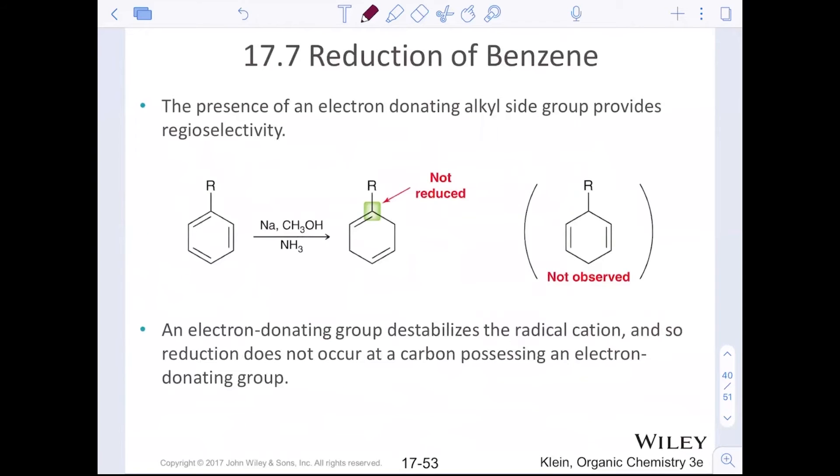If we have the presence of an electron donating group, an alkyl group, so an sp3 carbon, that usually provides some regioselectivity so that this carbon is not reduced with the electron donating group. Why? Because when we looked at the mechanism, that carbon, because it has an electron donating group, doesn't want more electrons. So it usually doesn't gain more electrons. So we usually just go right next door and start here and here and avoid this pi bond all together.